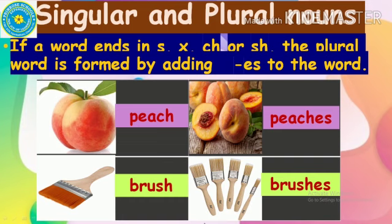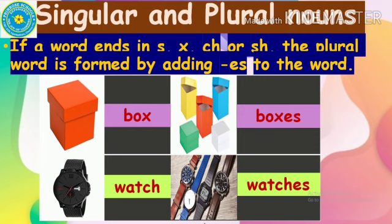The next picture is brush. The last two letters are SH. So if there are more than one brush, what is the plural form of the word brush? It's brushes — we are just adding ES to the end of that word. The next word is box. What is the last letter of the word box? It's X. If there are more than one box, we have to add ES at the end of the word to make it plural. So if there is more than one box, we say boxes.